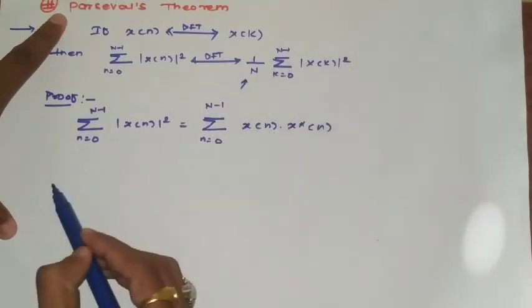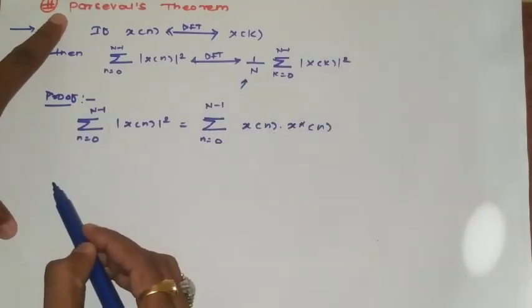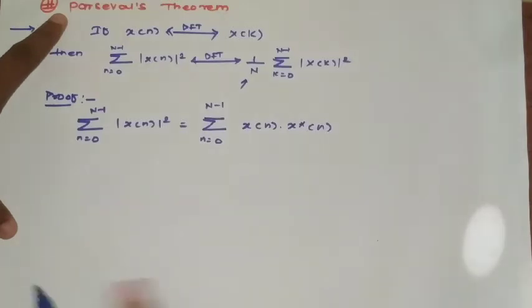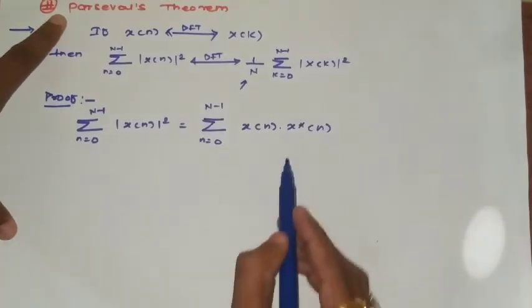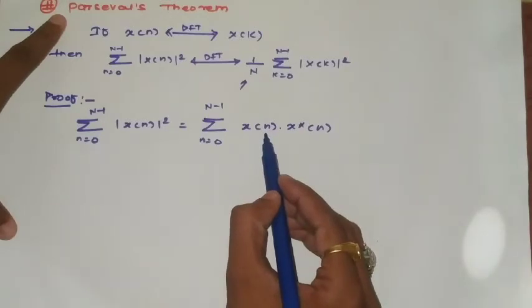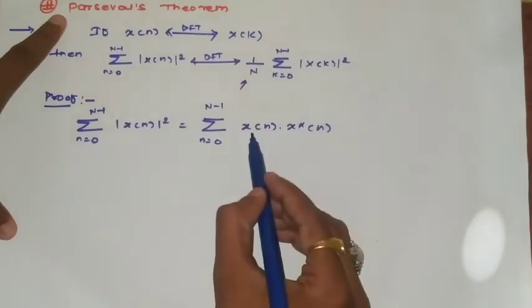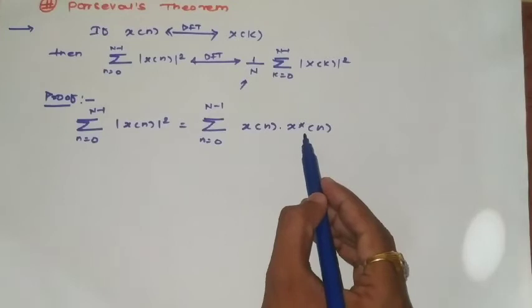To obtain 1/N, we use the inverse discrete Fourier transform formula. We can take the IDFT of either x(n) or x*(n). Let's take the IDFT of x*(n).